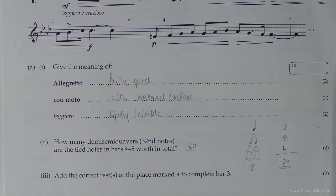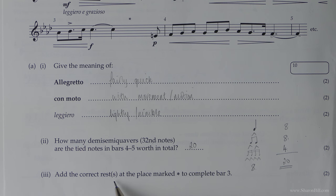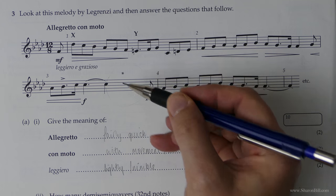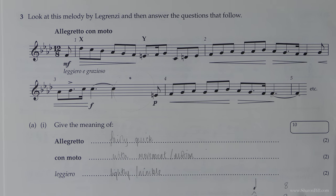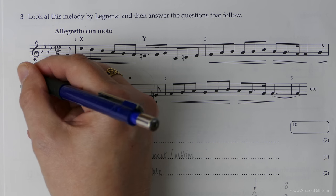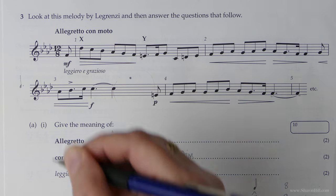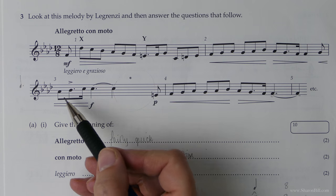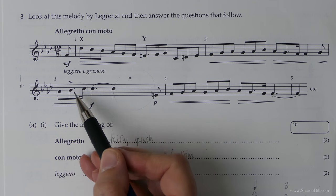Let's go to the next one. Add the correct rest or rests at the place marked with a little asterisk at bar three to complete bar three. So here. Now we need to reflect the time signature. We're in twelve-eight. So we've got groups of three. We've got four groups of dotted crotchets, dotted quarter notes.